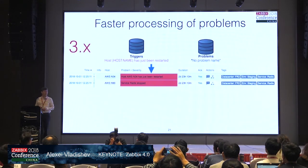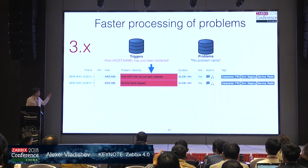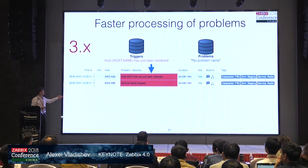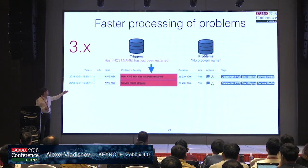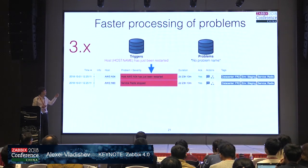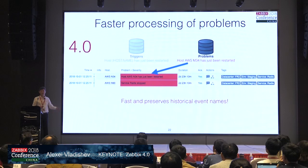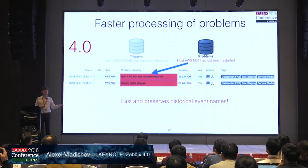Another improvement was related to the way we construct and process events. In previous versions of Zabbix, when you go to the list of problems, the names of those problems are calculated on the fly — we need to expand macros, which takes CPU resources. But starting from 4.0, problem names are generated and calculated as soon as the problem happens, and we keep those names in a database. Now when you go to the list of problems, it will appear much faster. We also preserve historical event names, so if you change a trigger name, historical event names will still be there.